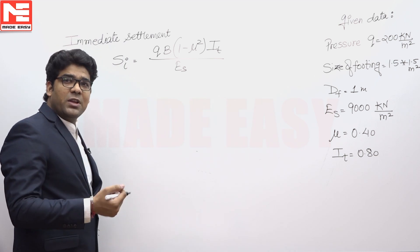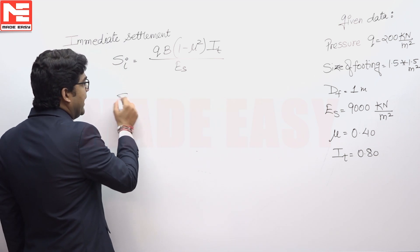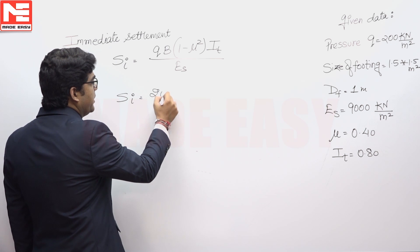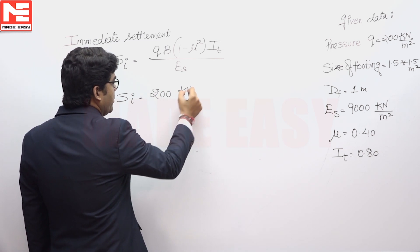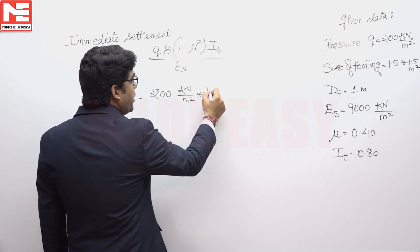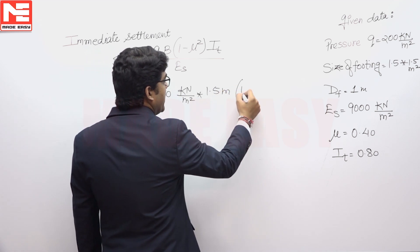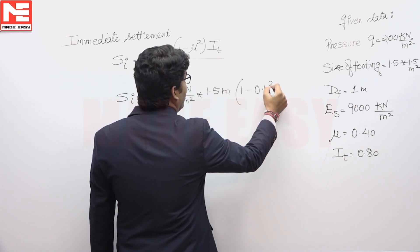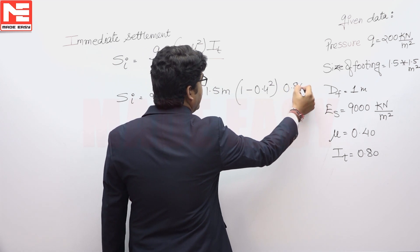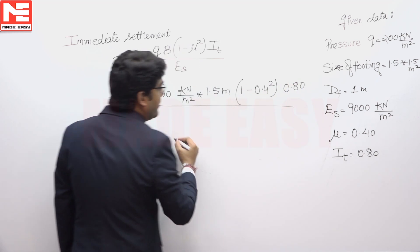So just we have to put the values in this equation. So SI is equivalent to 200 kilo Newton per meter square, B is 1.5 meter, 1 minus mu square that is 0.4 square, IT is given that is 0.80 divided by